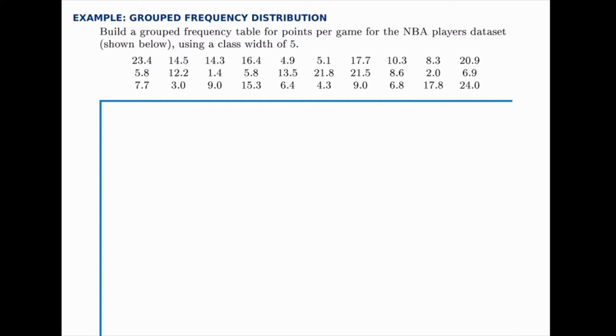And we're told to use a class width of 5 for our grouped frequency table. So we want to start low enough that we can cover all of them. And rather than starting at 1, let's start at 0 just to get a nice round number and make it easy for ourselves.